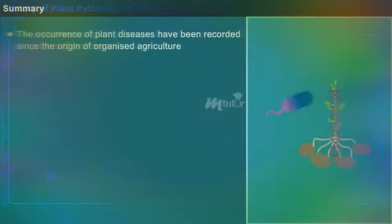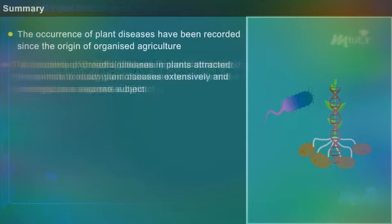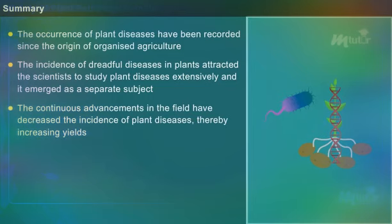Summary: The occurrence of plant diseases has been recorded since the origin of organized agriculture. The incidence of dreadful diseases in plants attracted scientists to study plant diseases extensively, and it emerged as a separate subject. Continuous advancements in the field have decreased the incidence of plant diseases, thereby increasing yields.